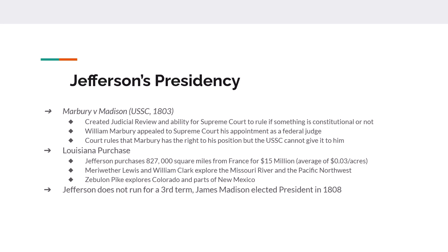Under Jefferson's presidency we also have the Louisiana Purchase. Jefferson purchases over 800,000 square miles from France and Napoleon for about 15 million dollars, and then sends Meriwether Lewis and William Clark to explore it. Jefferson doesn't run for a third term but handpicks his successor, James Madison.